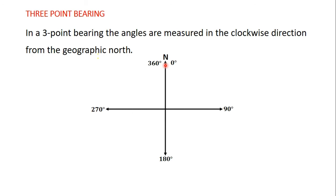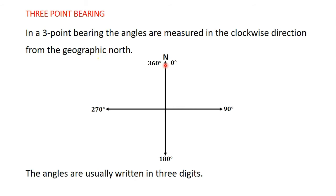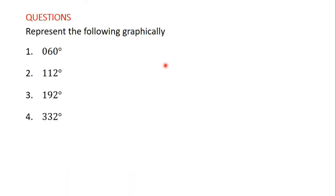The angles in three-point bearings are always written using three digits. Let's pick some examples and see how to represent three-point bearings on diagrams. We have four questions here and we'll take them one after the other.